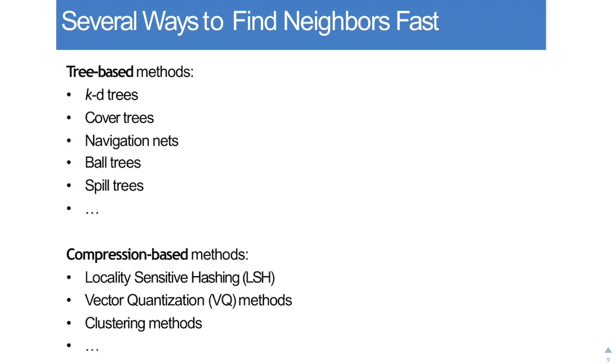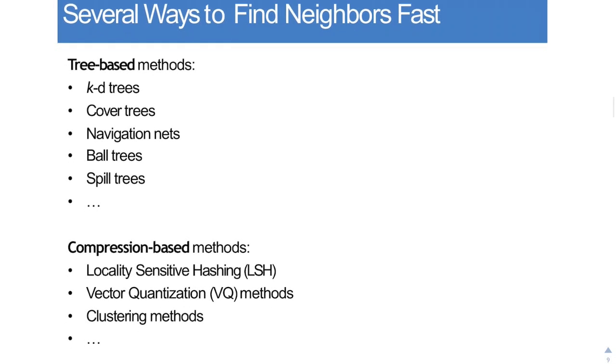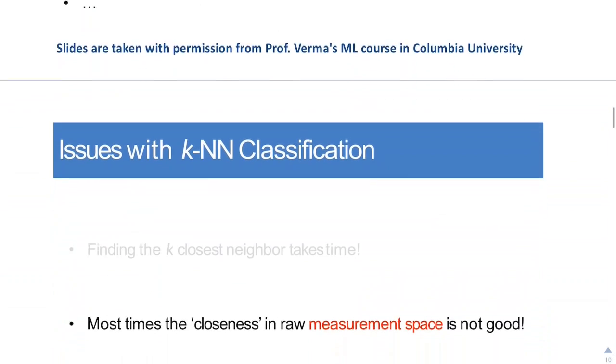So this was one of the way to find the nearest neighbor faster. Other tree based methods include KD trees, cover trees, ball and spill trees and so on. There are some compression based methods as well. I encourage you to look them up on the internet.